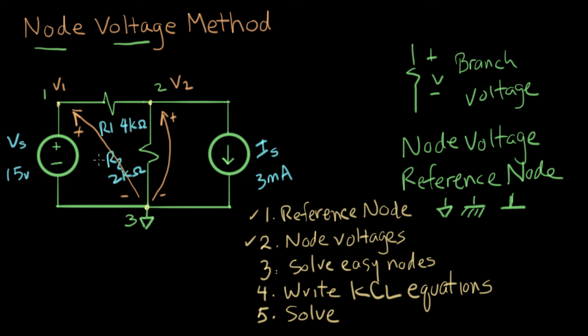The easy nodes are the ones that are connected directly to a source that goes to the reference node. That's an example of an easy node. So V1 is an easy node. So let's solve for V1. V1, I can just by inspection say V1 is 15 volts. So that's step three. The other node's not easy. The other node has lots of components and something interesting is going on over here. So this was step three. Let's label the steps. Here's step one. Here's step two. And here's step three.